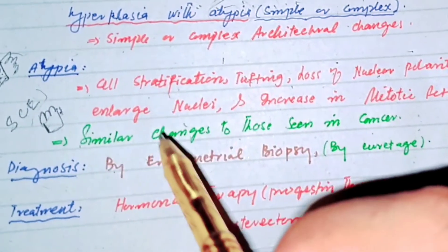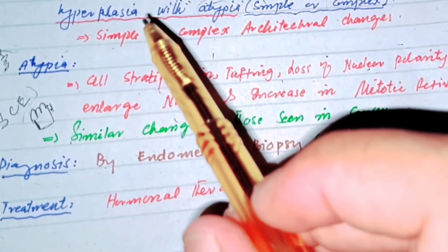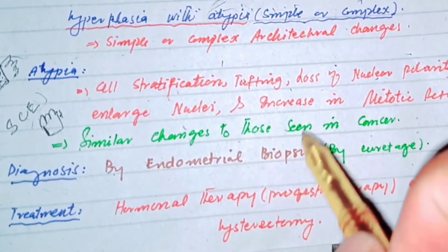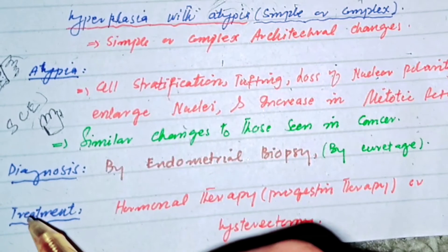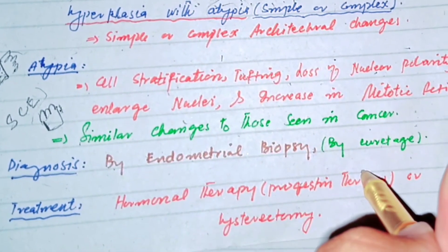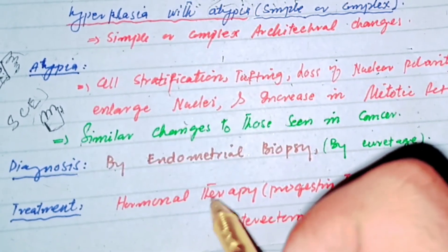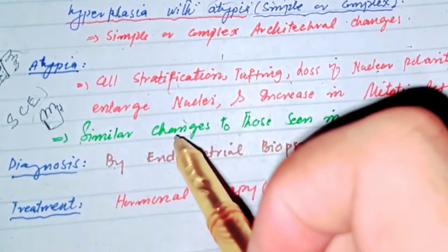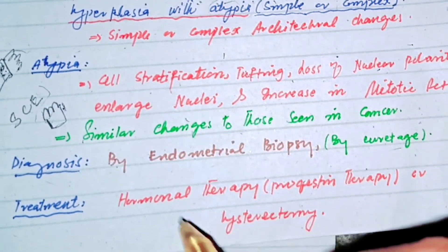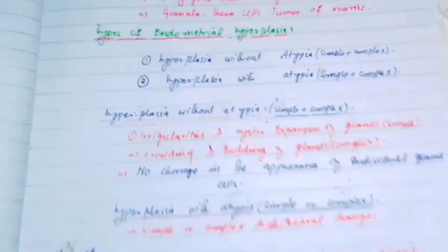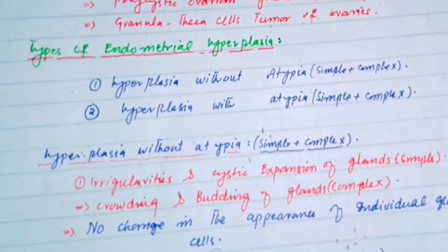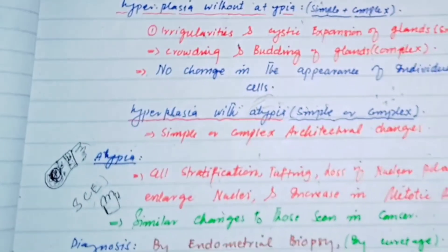Endometrial hyperplasia can be diagnosed by biopsy. Treatment is hormonal therapy such as progestin therapy. When hyperplasia with atypia occurs, it increases the risk for cancer, so hysterectomy can benefit the patient. That was all about endometrial hyperplasia — for more videos, please subscribe and like. Thanks for watching.